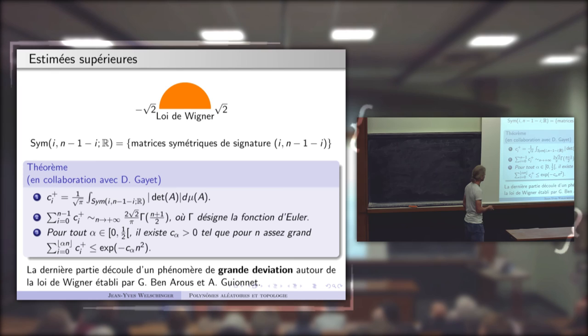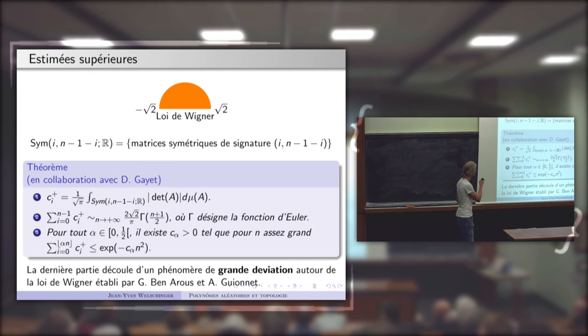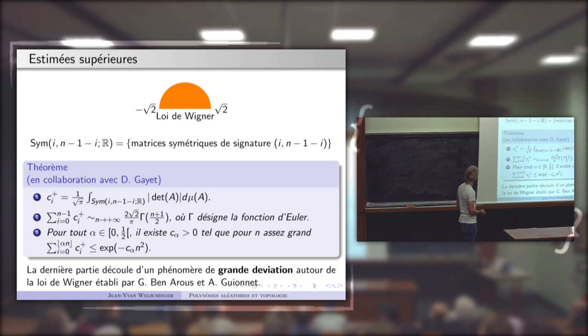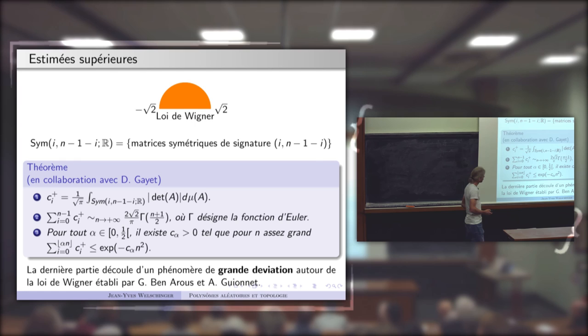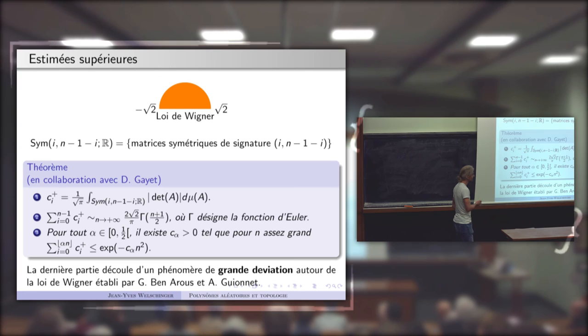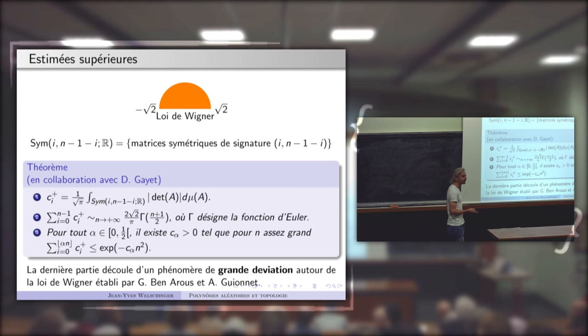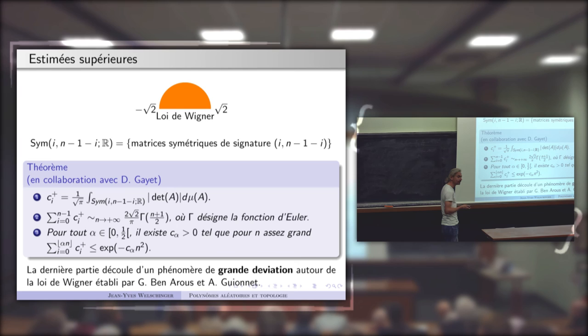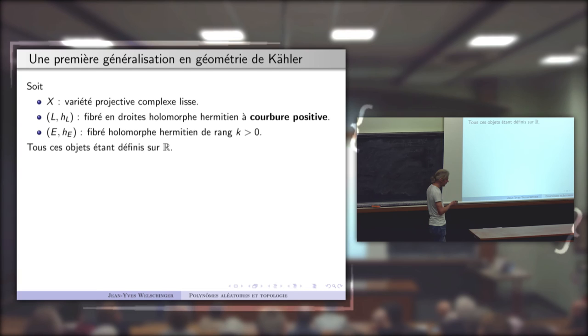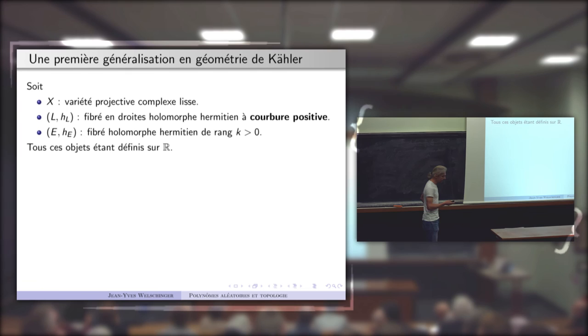Voilà un panorama des résultats obtenus. Je voulais vous signaler aussi des cadres géométriques plus généraux où on étudie ces problèmes — ce qui justifie d'ailleurs une deuxième justification que la mesure de Kostlan est naturelle géométriquement.